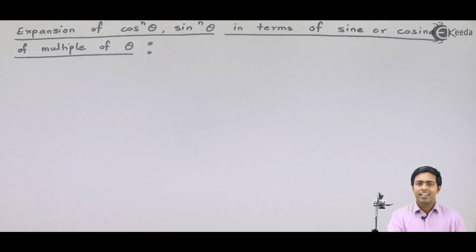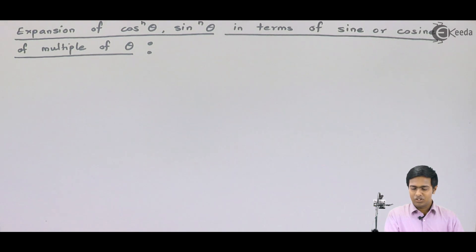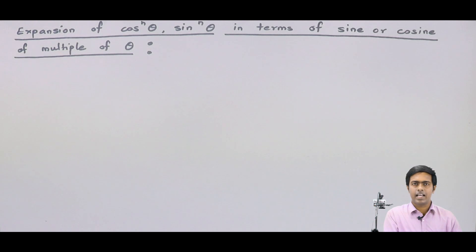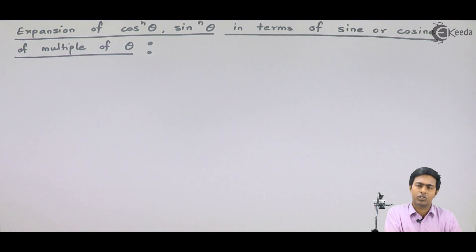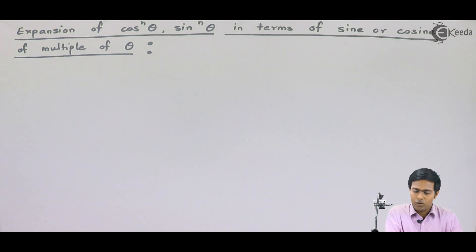Let us see one more concept of complex numbers. This concept is the expansion of cos^n(θ) and sin^n(θ) — that is, powers of trigonometric ratios in terms of sine or cosine of multiples of theta. Many times we get problems where we have to expand the powers of trigonometric terms in terms of multiples of some trigonometric ratios, so in such cases we use this method.